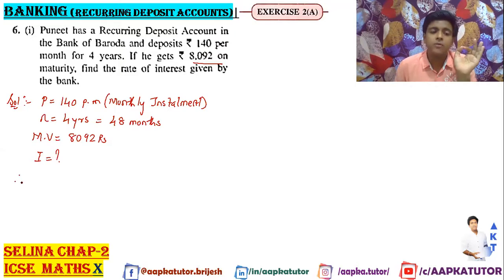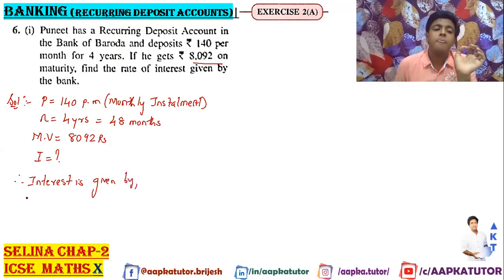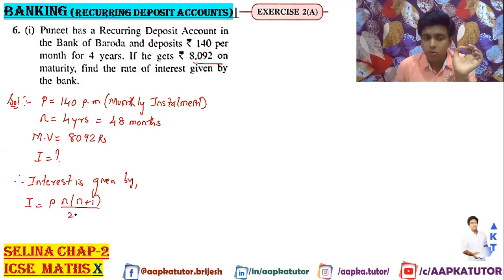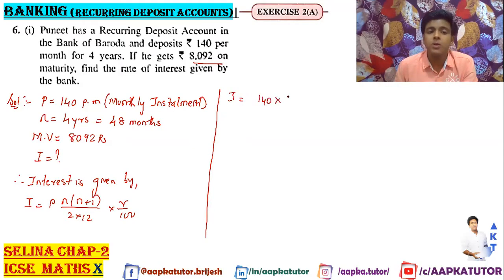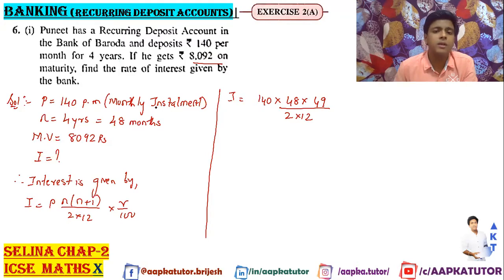So the interest is given by: I = P × n × (n+1) / (2 × 12) × r/100. You have to find the interest formula. Now the P value is 140, and n is 48. So it is 140 × 48 × 49 divided by 2 × 12.